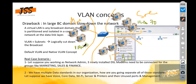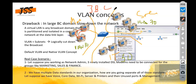Devices under VLAN 10 can communicate with each other, but a device in VLAN 10 cannot communicate with an IT machine in VLAN 50 because they are on different VLANs. Each VLAN is a single broadcast domain, and we have three separate broadcast domains here — they are logically partitioned.